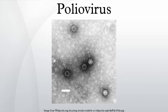Paralytic poliomyelitis occurs in less than 1% of poliovirus infections. Paralytic disease occurs when the virus enters the central nervous system and replicates in motor neurons within the spinal cord, brain stem, or motor cortex, resulting in the selective destruction of motor neurons leading to temporary or permanent paralysis. In rare cases, paralytic poliomyelitis leads to respiratory arrest and death. In cases of paralytic disease, muscle pain and spasms are frequently observed prior to onset of weakness and paralysis. Paralysis typically persists anywhere from days to weeks prior to recovery.